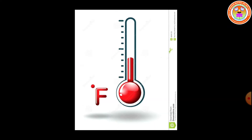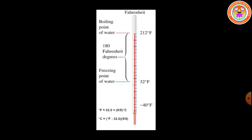Next one is Fahrenheit scale. The picture shows the Fahrenheit scale. Fahrenheit is a common unit to measure human body temperature. It is termed after the name of German physicist Daniel Gabriel Fahrenheit. The freezing point of water is taken as 32 degree F and boiling point is 212 degree F. In Celsius scale the freezing point is 0 degree Celsius, but in Fahrenheit scale it starts from 32 degree F and boiling point is 212 degree F.